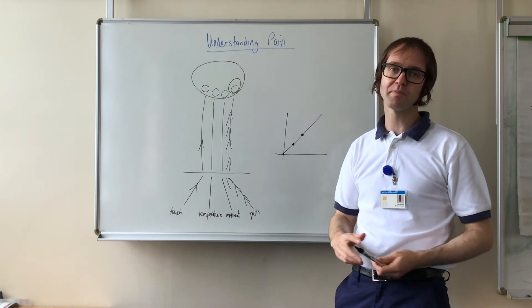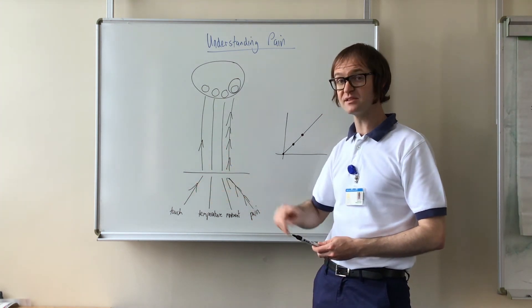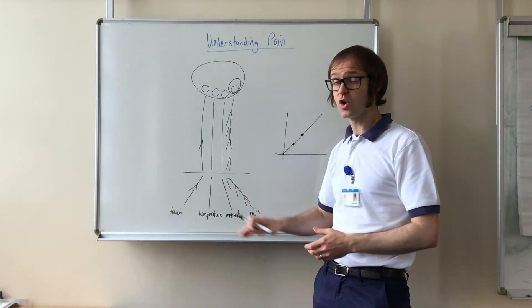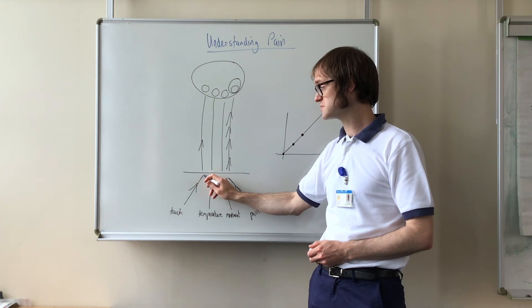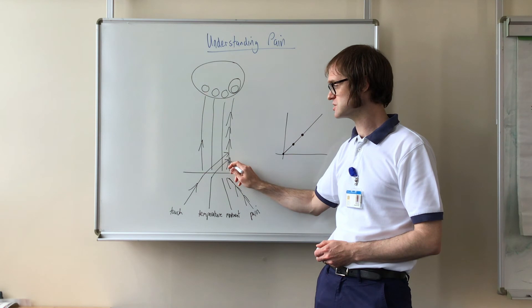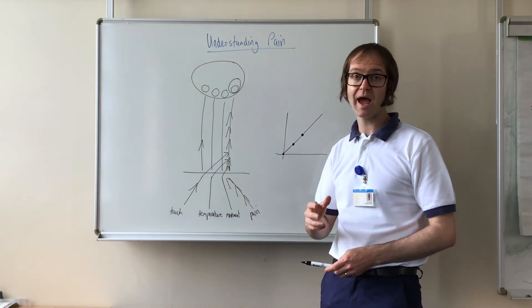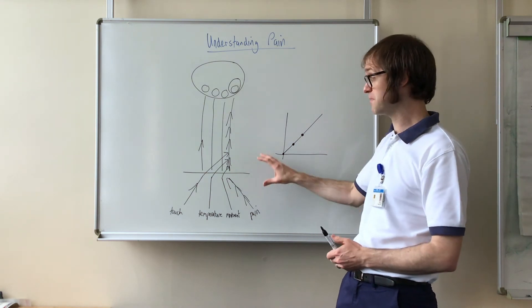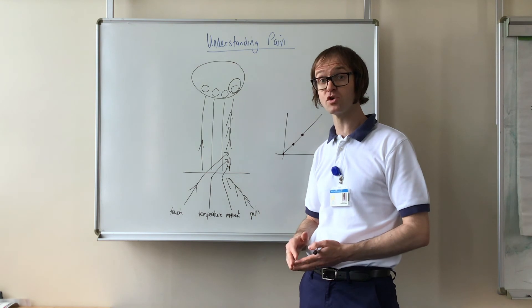One extra complication that can happen is where all these nerves meet in the spinal cord, we call it a synapse. And as it happens, sometimes the nerves get a bit confused and they start sending messages up the wrong part of the spinal cord. So now not only are we getting too many pain messages, but also other things can start to cause pain.